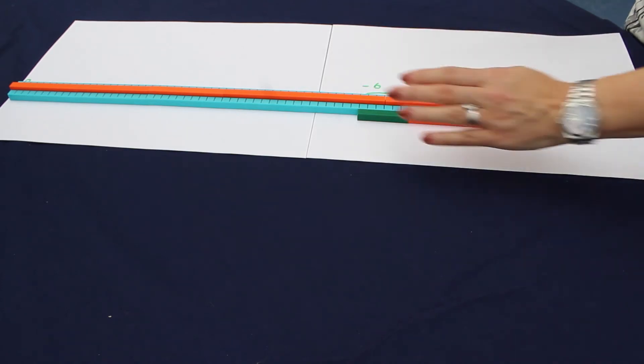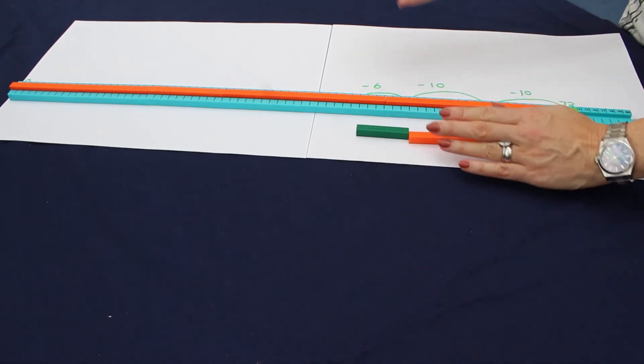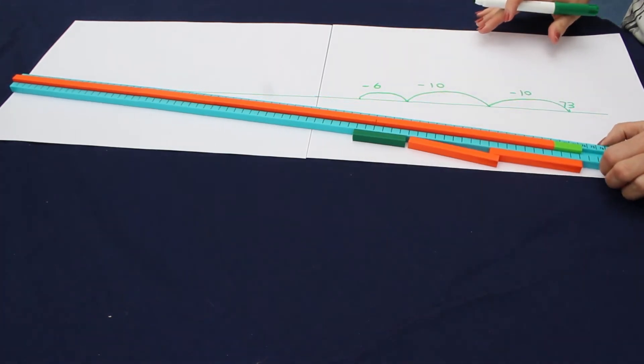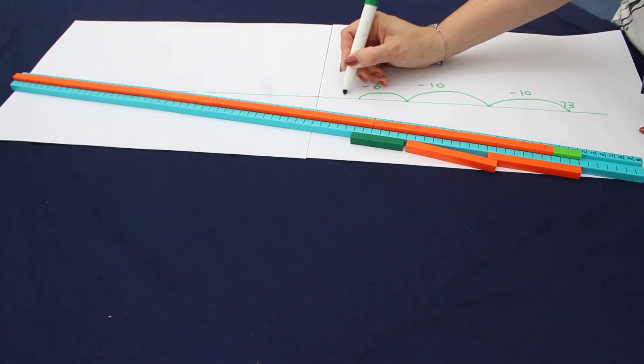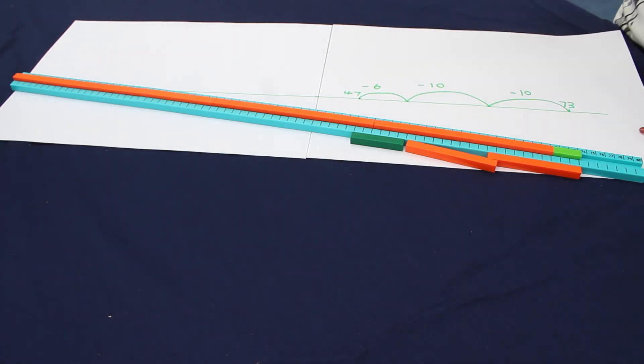It's quite useful to do that because then when you move the model away, the children can have an empty number line that has their answer as 47.